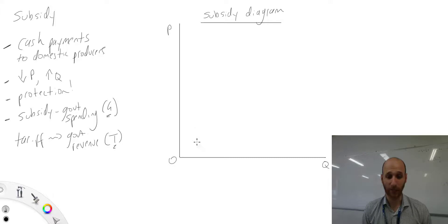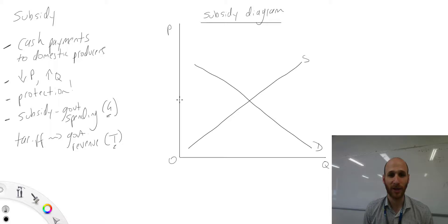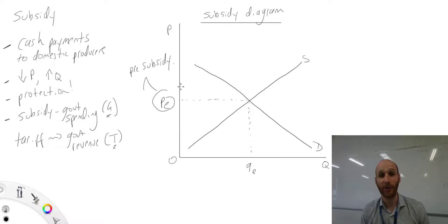Let's move over to the actual diagram of a subsidy. You can see we've got P and Q as per usual - that's our supply curve and our demand curve. We've got price equilibrium and quantity equilibrium. This here is pre-subsidy, so no subsidy has been paid just yet.